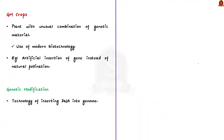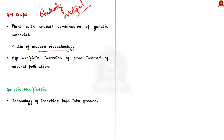First of all, what are GM crops? GM stands for genetically modified. A GM crop is nothing but a plant that has a novel or unusual combination of genetic material obtained through the use of modern biotechnology. For example, a GM crop can contain a gene that has been artificially inserted instead of acquired through pollination. The resulting plant is said to be genetically modified.